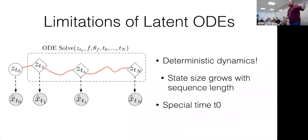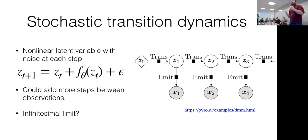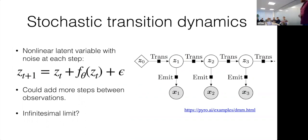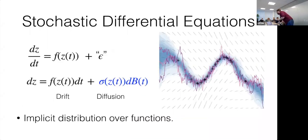The deterministic dynamics is the major limitation of latent ODEs. What if we wanted to add stochastic transition dynamics, like Kalman filters have — a random variable conditioned on the previous state at every time step? What if we could add noise to an ODE and take the infinitesimal limit? This is exactly what stochastic differential equations do, and I found them scary and confusing until I made the connection that they are really just literally that.